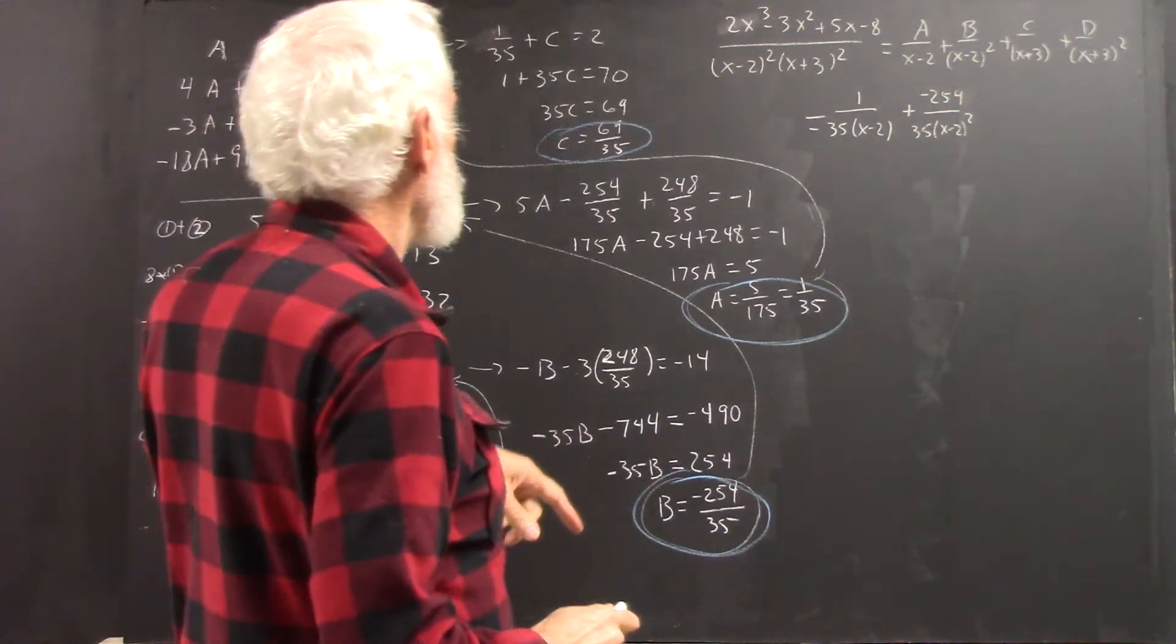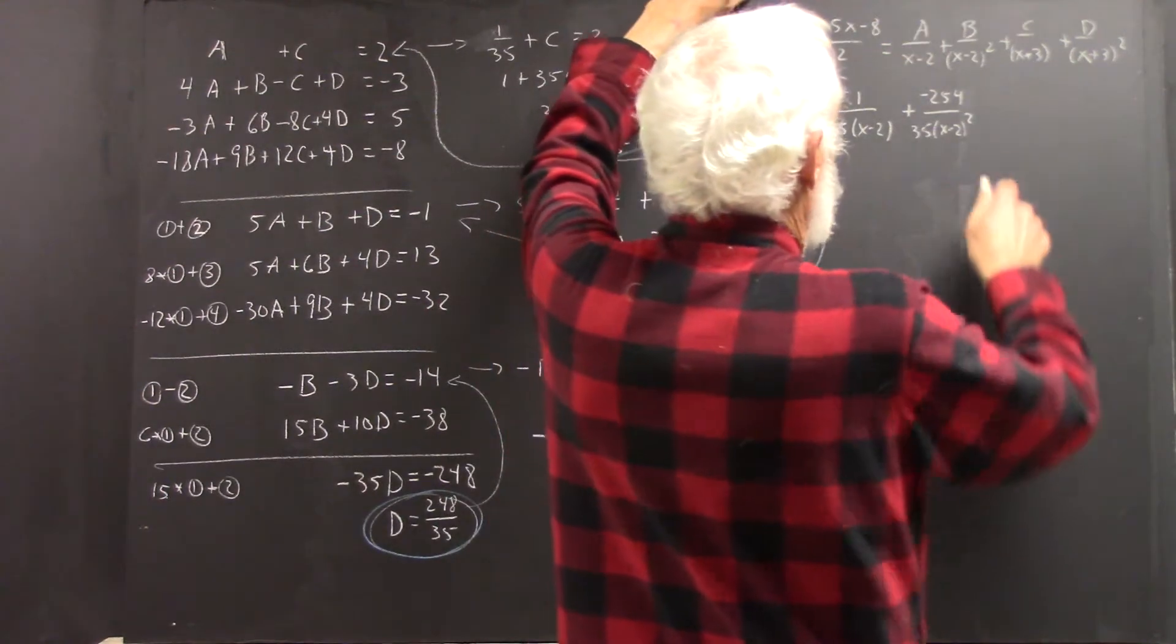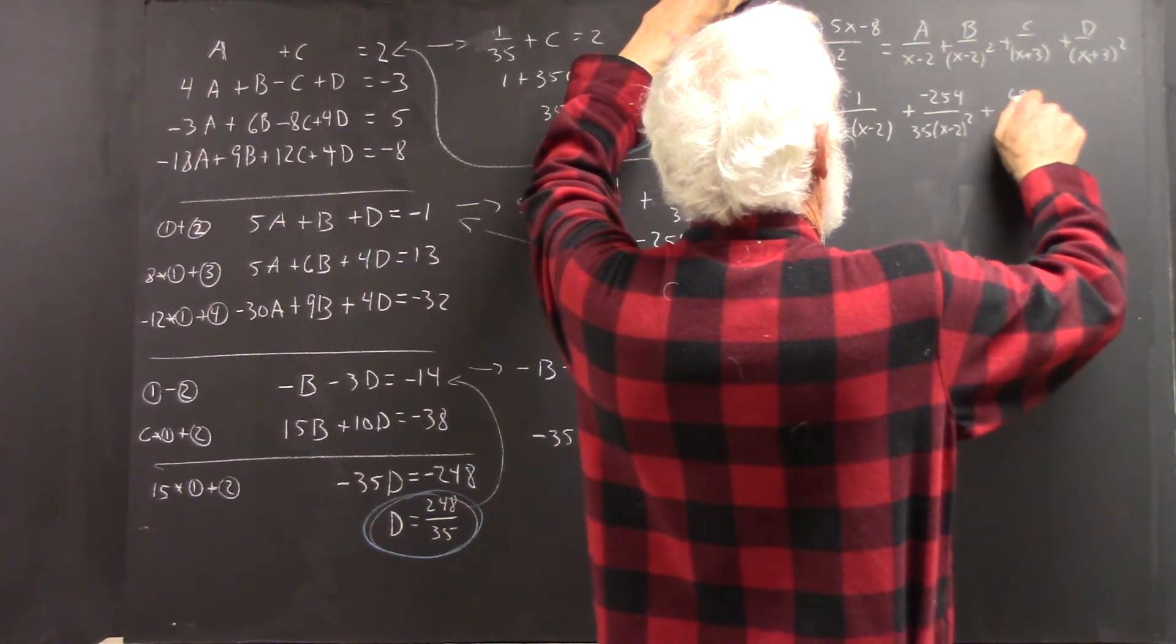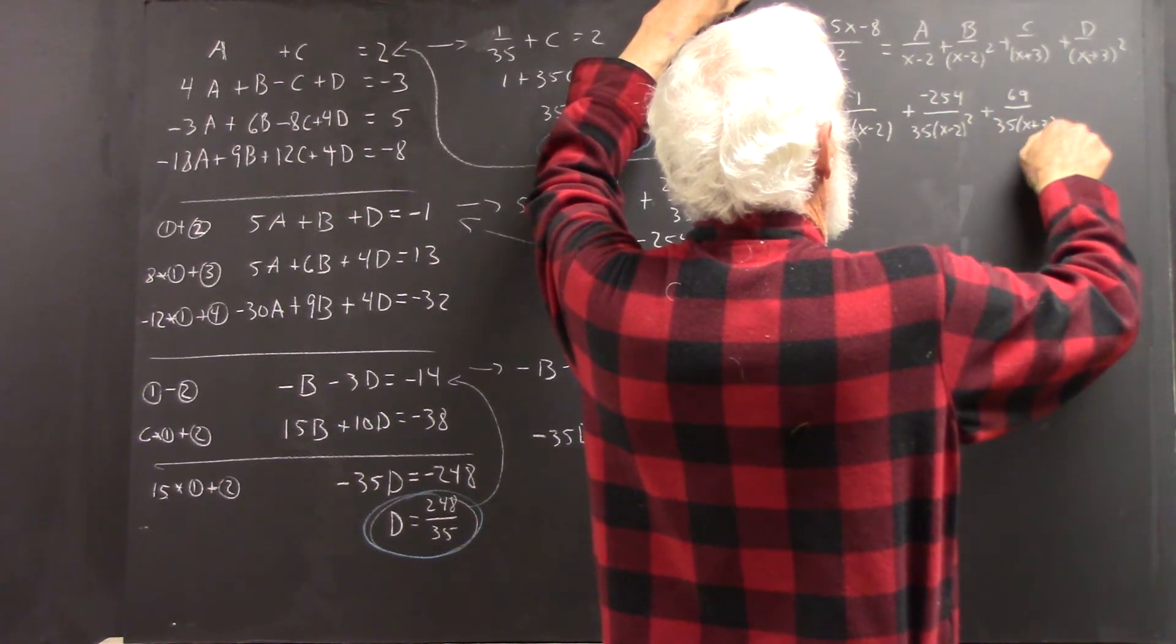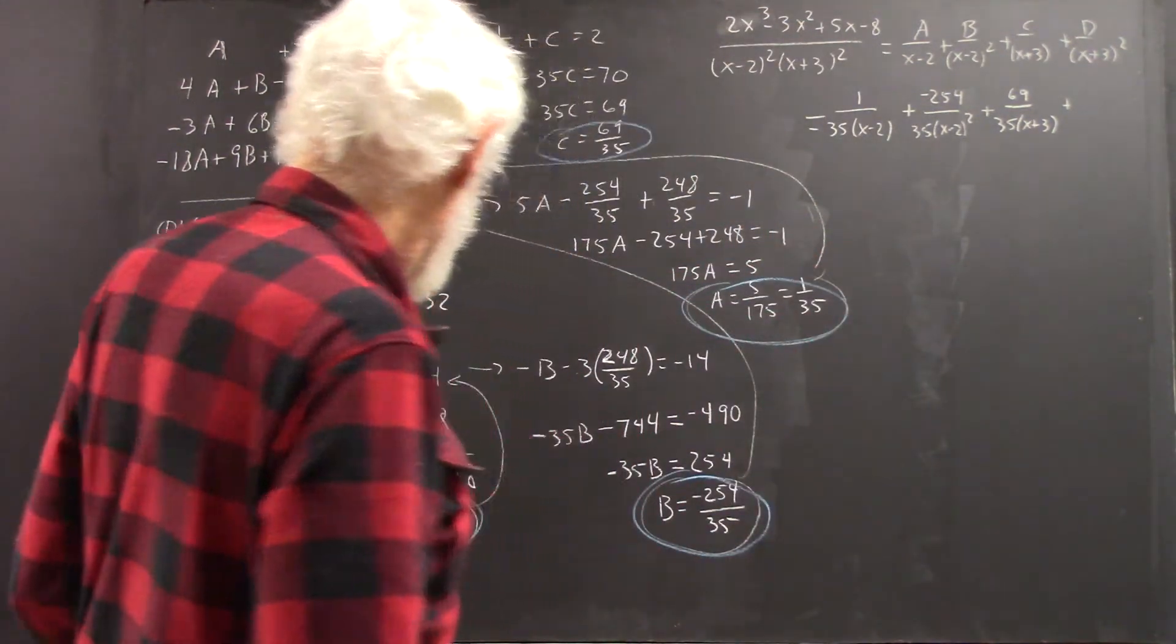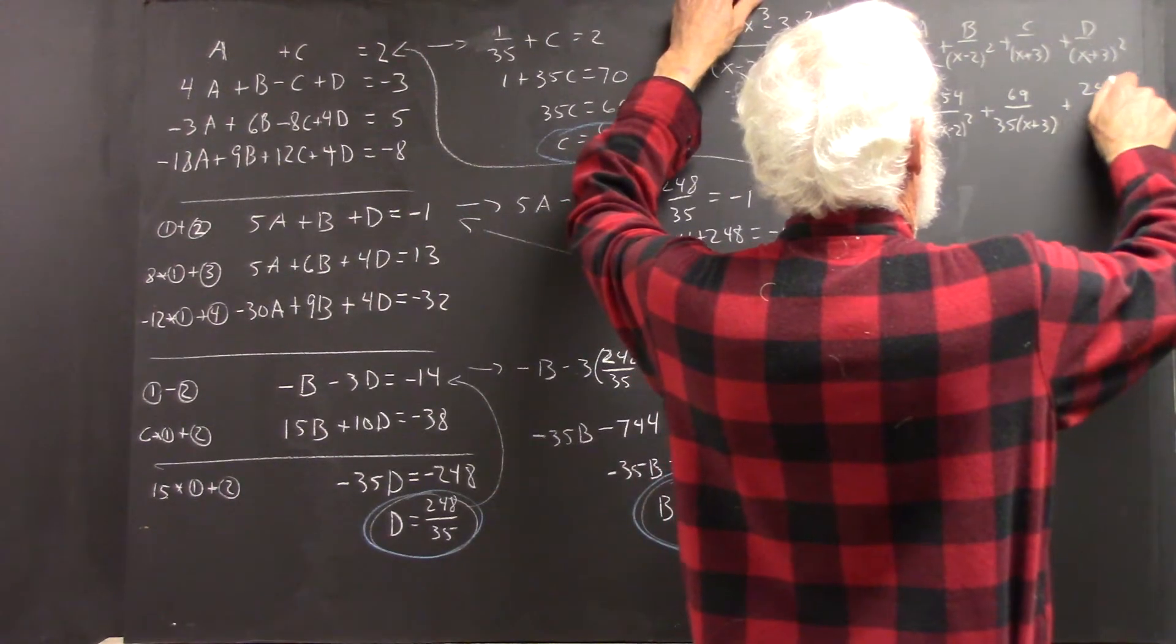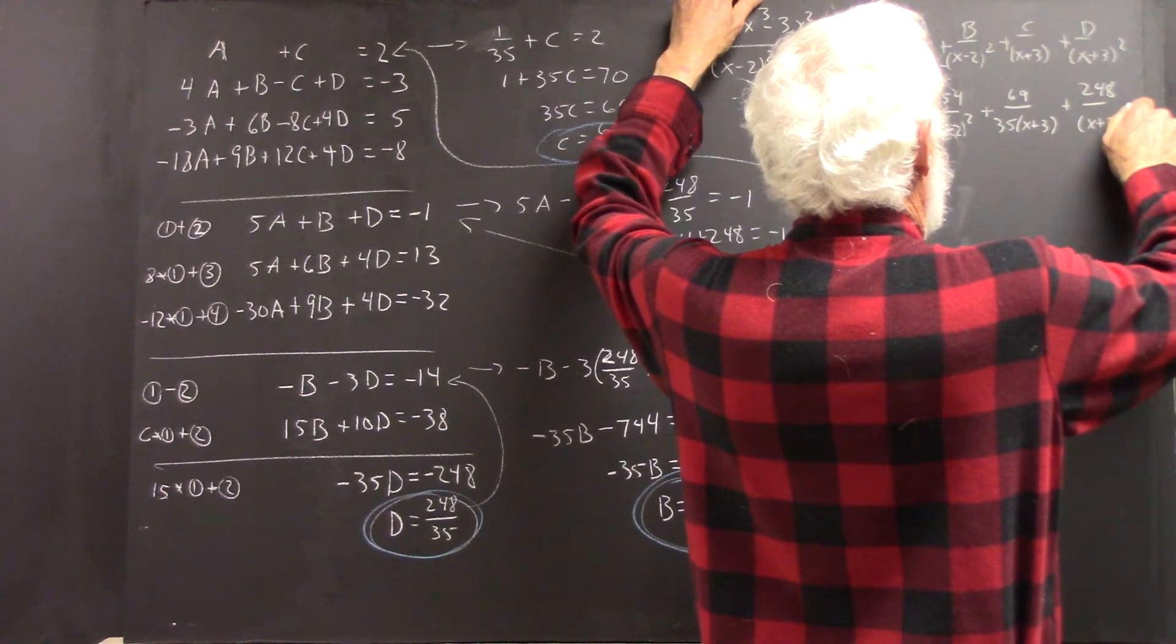C is 69 over 35, so C over X plus 3 will be 69 over 35 times X plus 3. And D is 248 over 35, so we've got 248 over X plus 3 quantity squared.